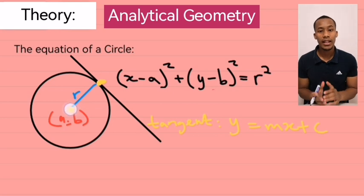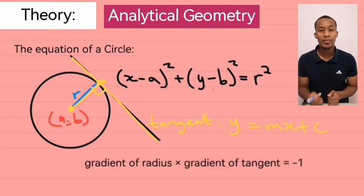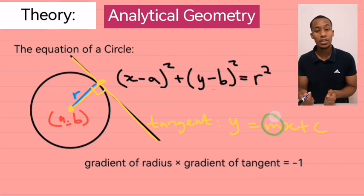But, if you can find the gradient of the radius, we know that a radius is always perpendicular to a tangent. So, therefore, the gradient of the radius multiplied by the gradient of the tangent should give us a product of negative 1.